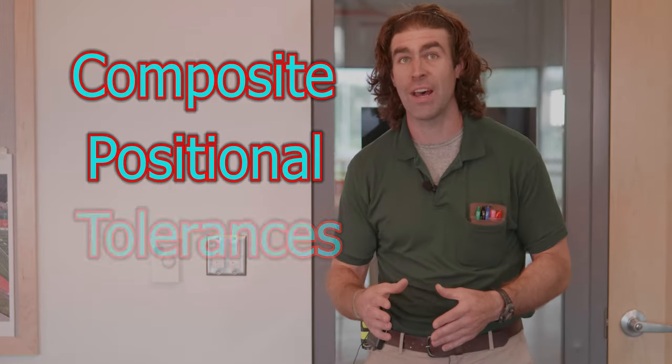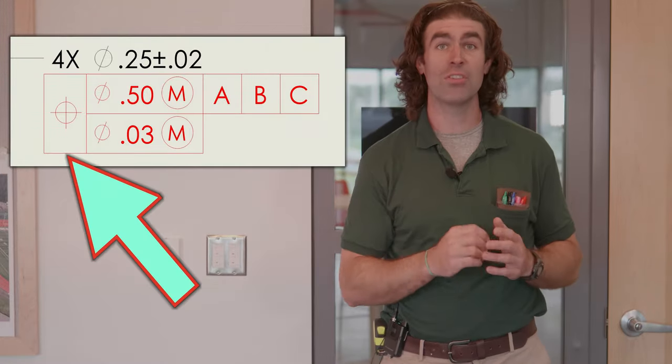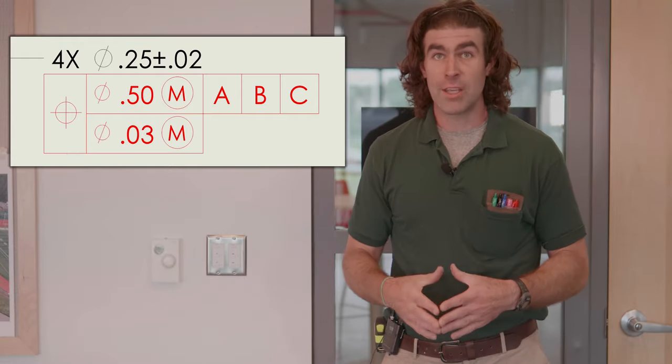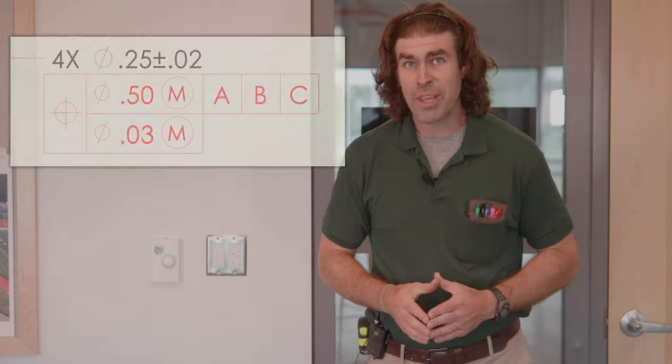So you might wonder, why am I standing in front of a blank wall with a light switch? Well, that's what we're going to talk about today. This is how I like to explain composite positional tolerances. Composite is when you have one GD&T symbol in the feature control frame. You'll see an image right here. You've got the one position symbol, and you've got two tolerances. Looks tricky. Let me explain what they're for.